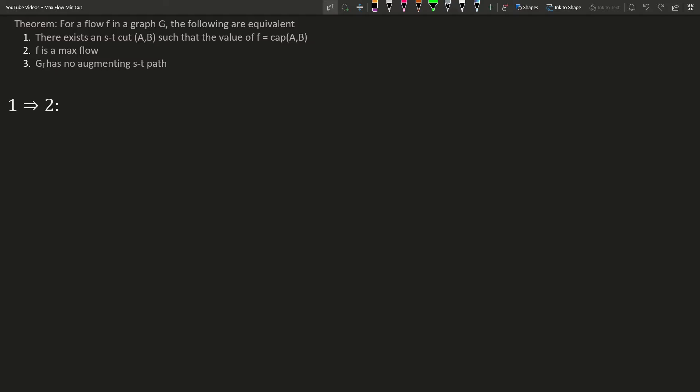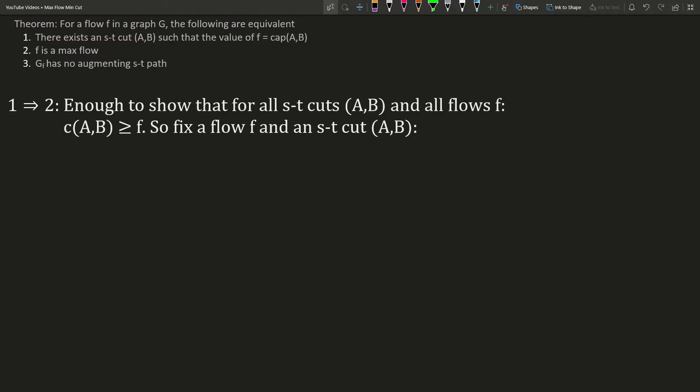The first implication is also the trickiest. We assume that there is an ST cut AB such that the value of F equals the capacity of the cut. We need to derive that then F is a max flow. Note that it's enough to show that all ST cuts create an upper bound for the value of the flow. In other words, the value of any flow can never exceed the value of any cut. If no flow can ever exceed the value of any cut and by assumption we have a cut that has the value of the flow, then the inequality holds with equality and F must be a max flow.